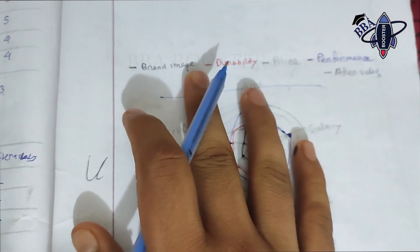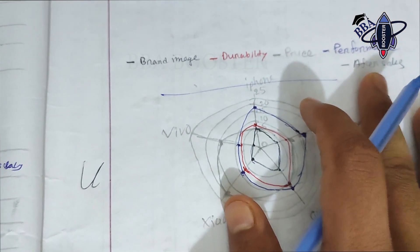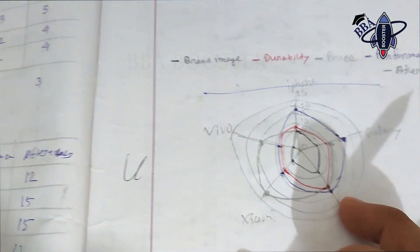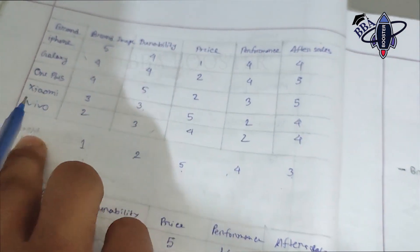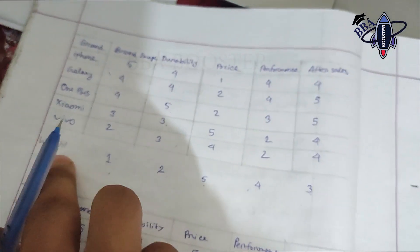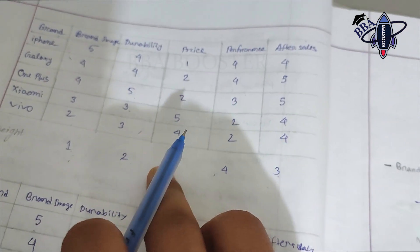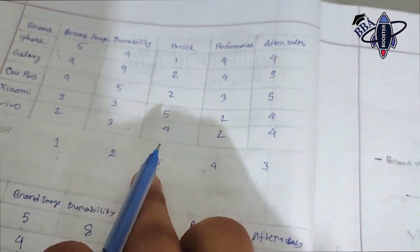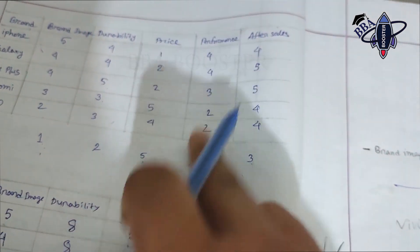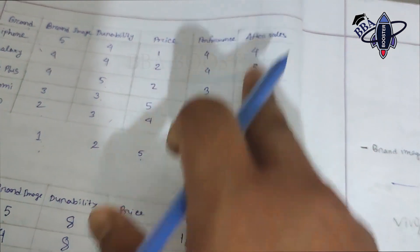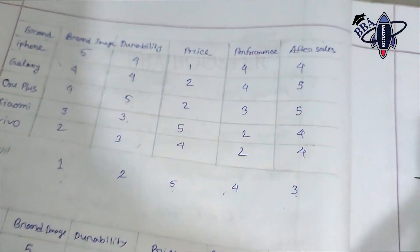To summarize, we used the following weights: price is 5, performance is 4, after-sales is 3, durability is 2, and brand image is 1. These weighted scores were used to plot each brand on the perceptual map.